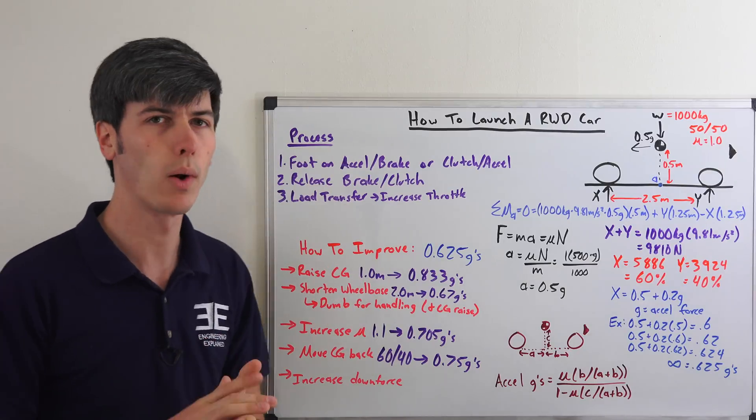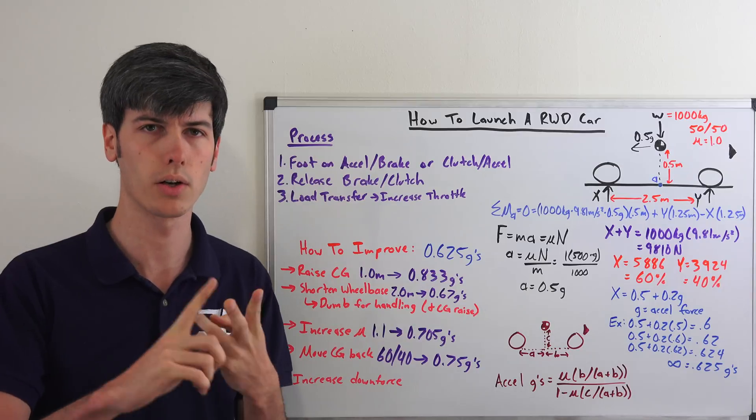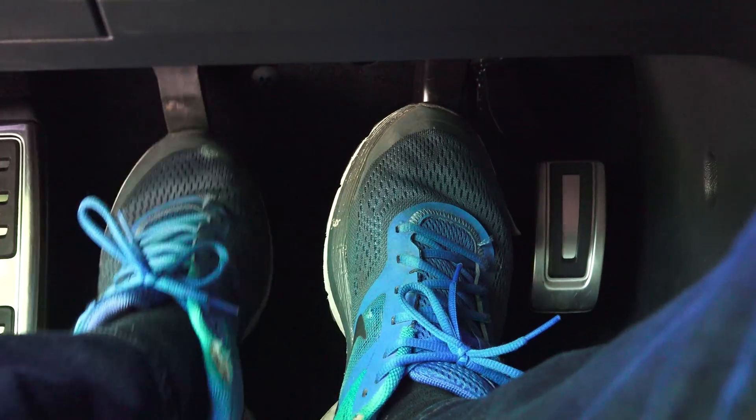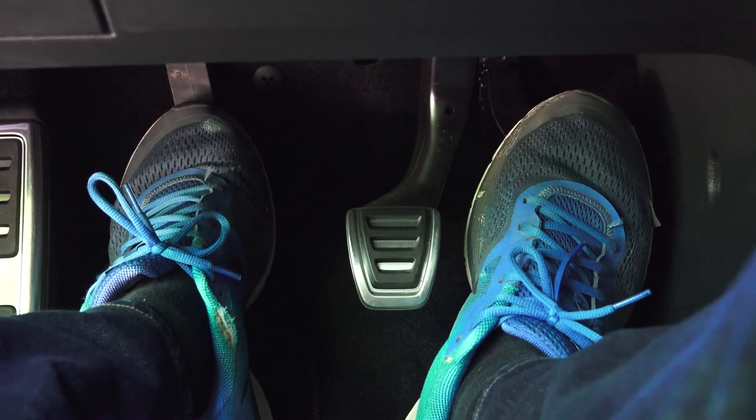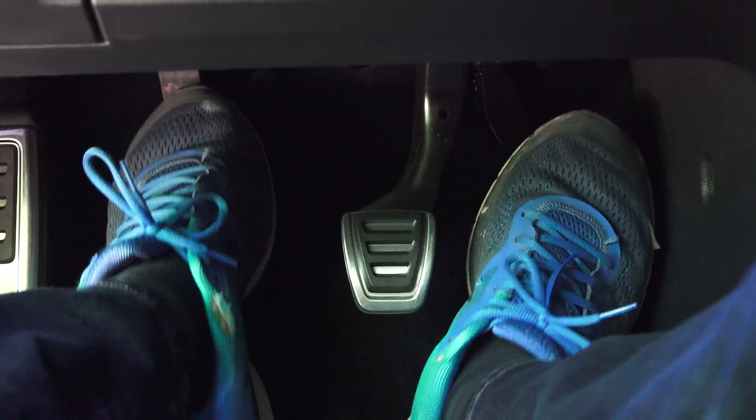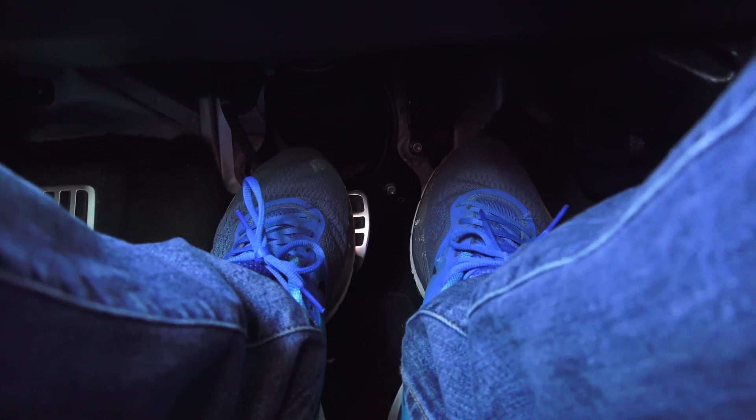So the process, if you've watched my videos on how to launch a manual transmission vehicle or how to launch an automatic transmission vehicle, then you know this basic process. But it's a little bit different for a rear-wheel drive car, and that's what we're going to talk about here. So foot on the accelerator or brake, or on the clutch and pedal, and then you're going to release either the clutch or the brake, and that of course will send you on your way.